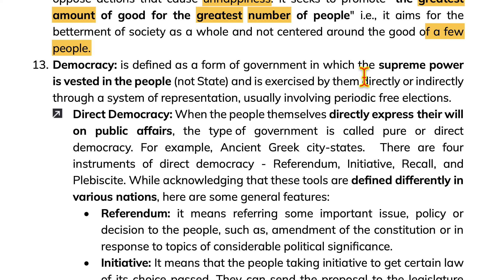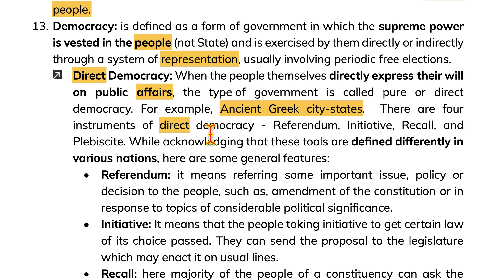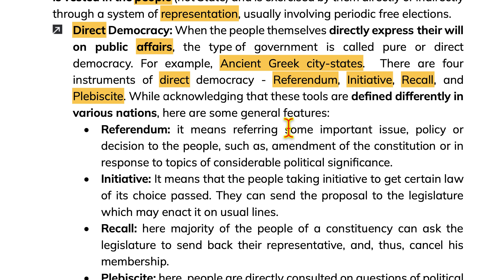Democracy is defined as the form of government in which supreme power is vested in the people, not the state. It is exercised by them directly or indirectly through the system of representation, usually involving periodic free elections. Direct democracy is when people themselves directly express their will on public affairs. There are four instruments of direct democracy: referendum, initiative, recall and plebiscite.